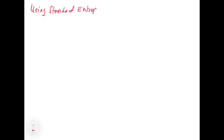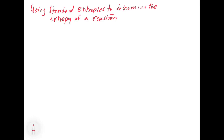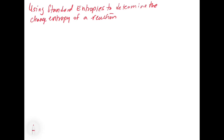We're going to look at using standard entropies to determine the change in entropy of a reaction. We have that big table of S0, and we know what the entropy of all of those different compounds are. What we can do is create an equation that allows us to look at the starting entropy and the ending entropy, so what was the change in entropy?